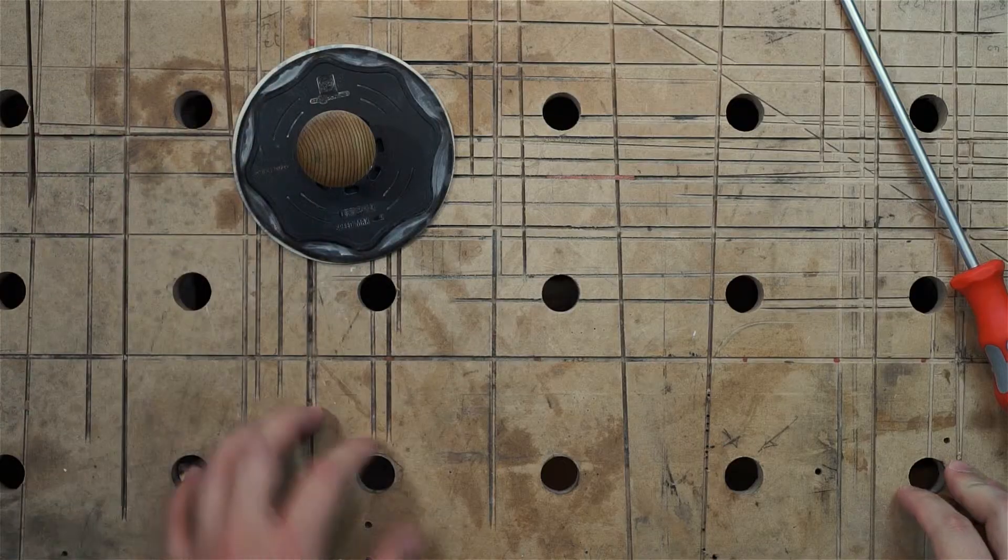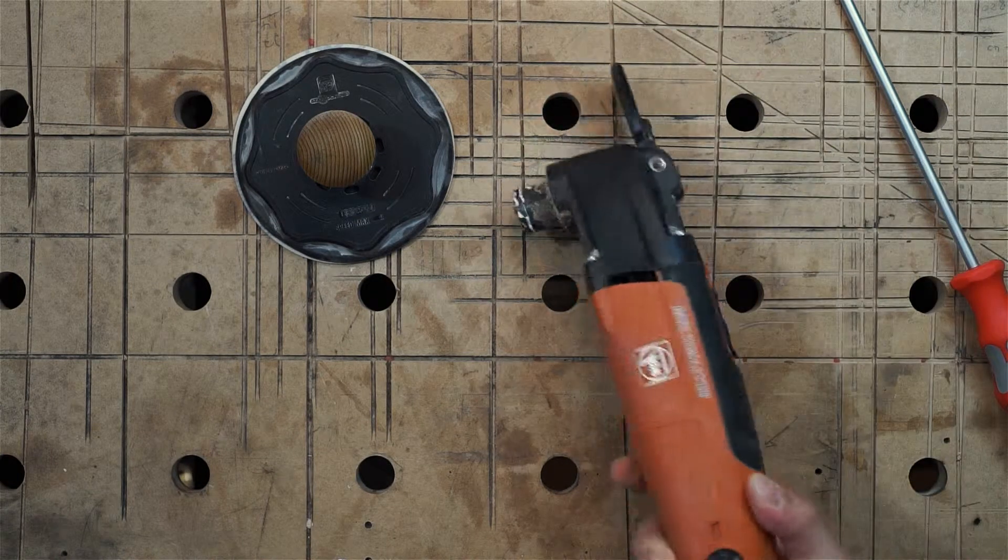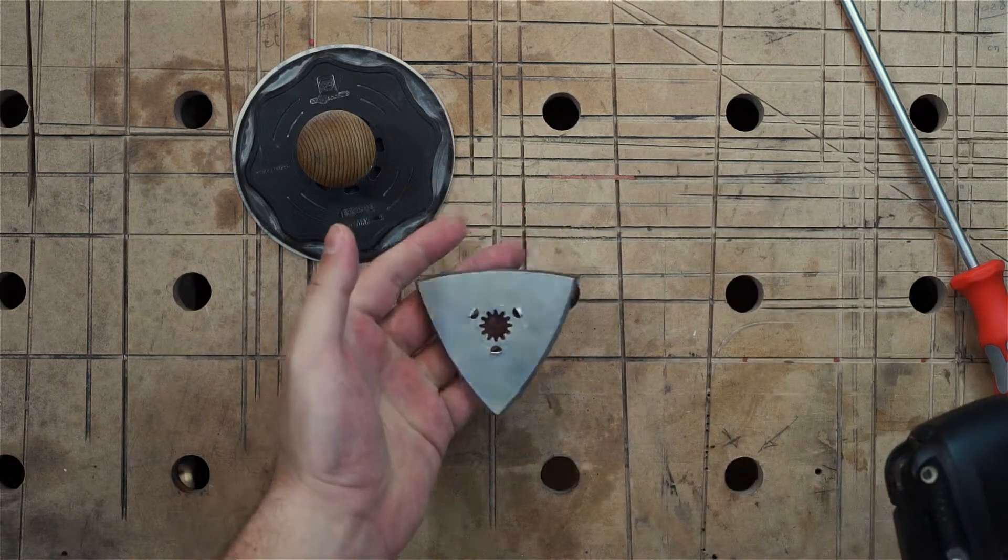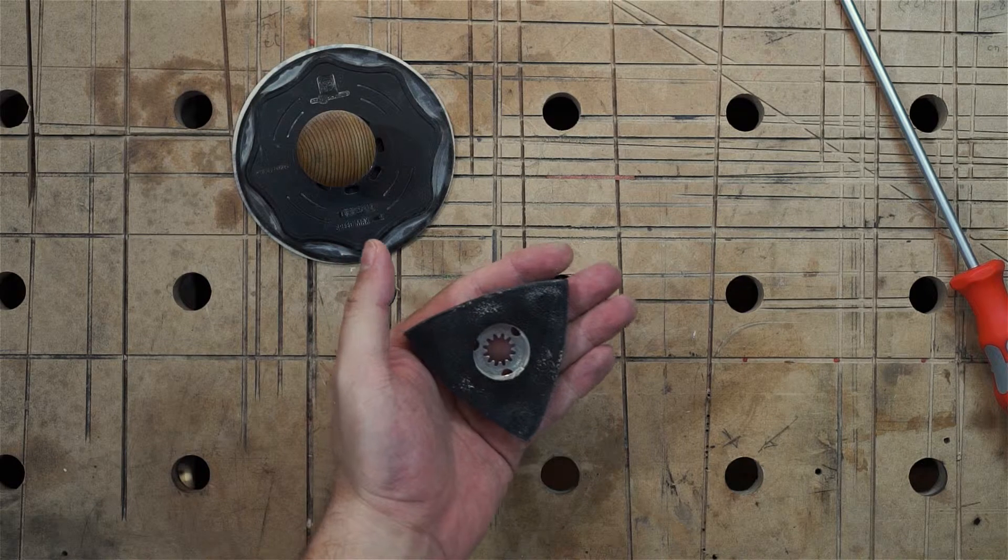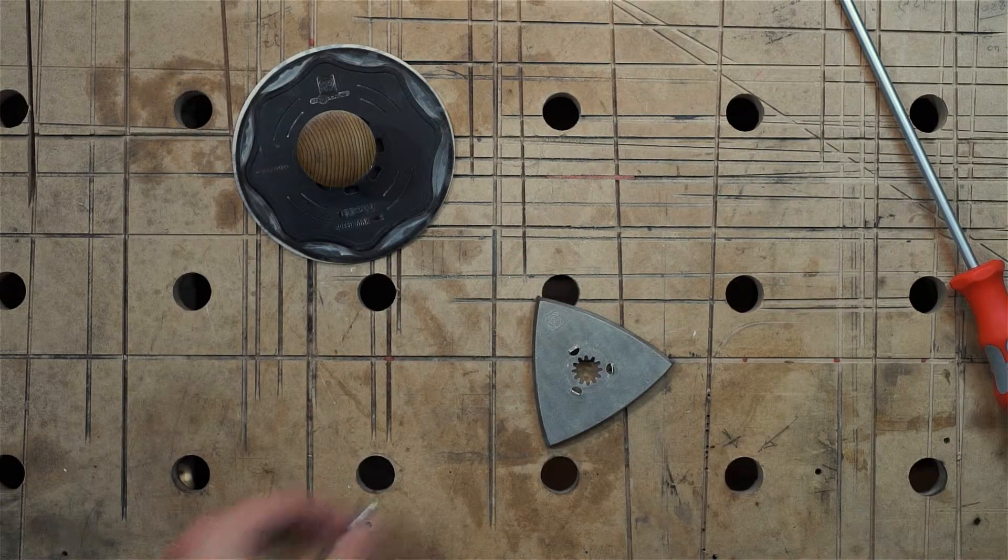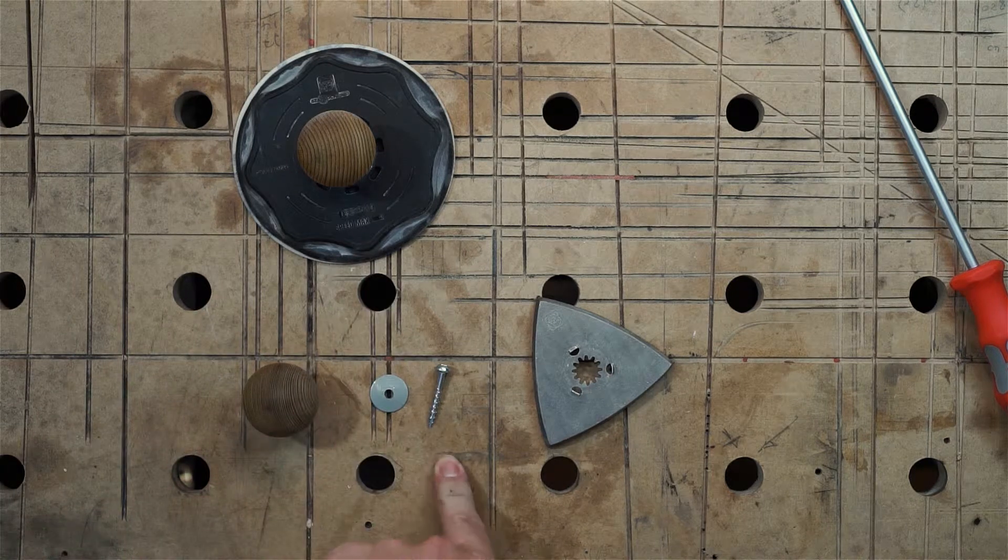And for odd shapes, this Fein multimaster tool has these nifty little plates, and we can convert them also with the same ingredients: a handle, a washer, and a screw.